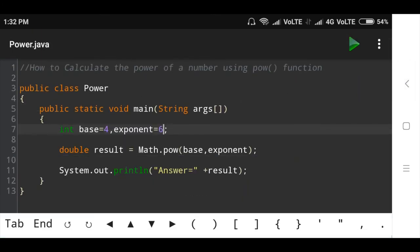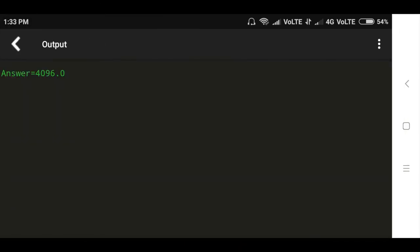Now we will run this program and check the output. Now look, base is 4 and exponent is 6, so the power is 4096.0.